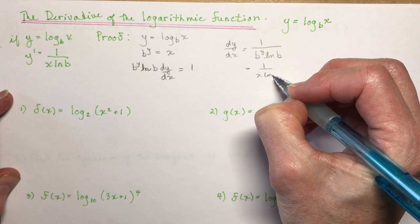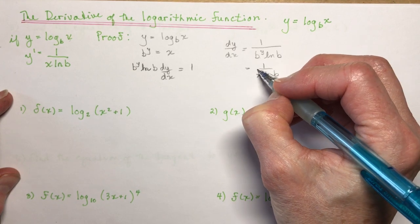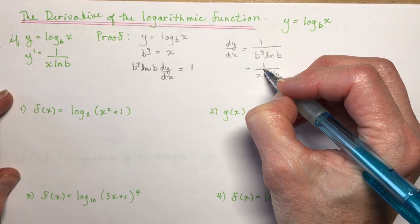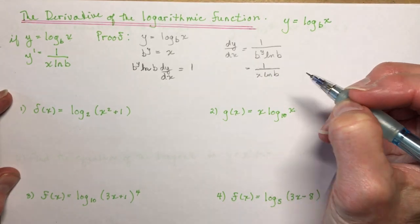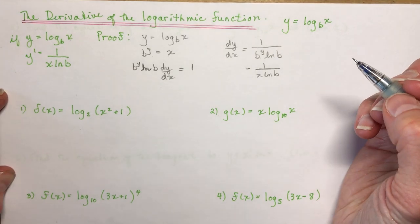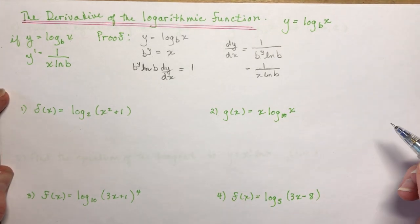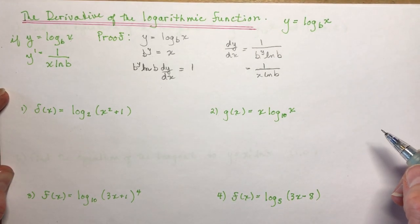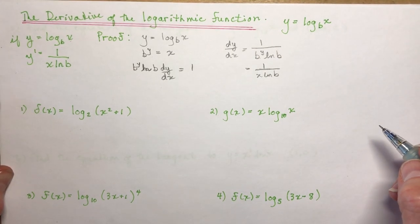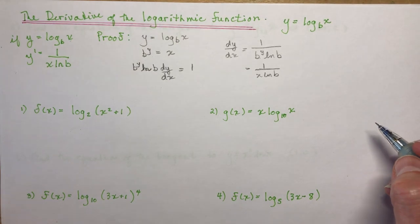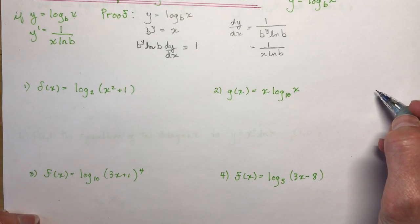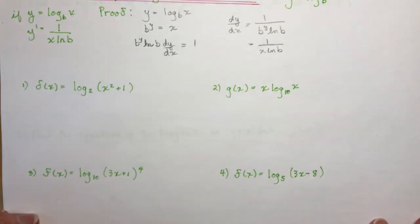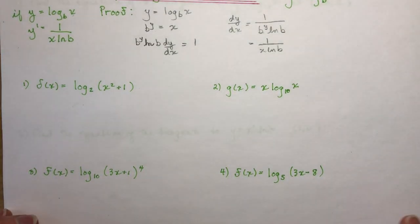It's a really nice proof. So you should say that to yourself a few times: 1 over x·ln b. Now let's look at some practice examples so we can get this straightened out.